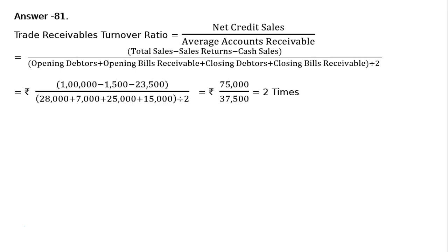That is equal to rupees 1 lakh minus rupees 1,500 minus rupees 23,500, whole divided by rupees 28,000 plus rupees 7,000 plus rupees 23,500, whole divided by 2. That is equal to rupees 75,000 upon rupees 37,500, which equals 2 times.